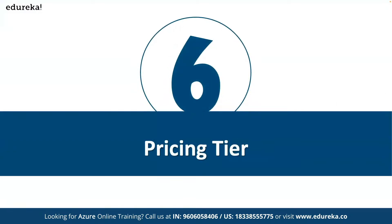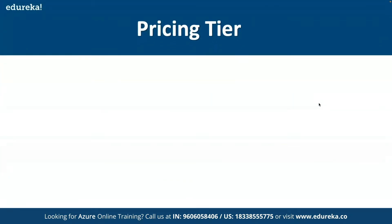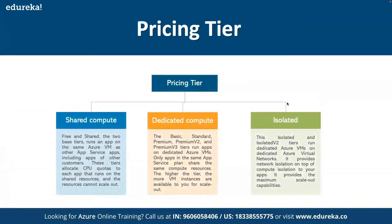Regarding the pricing tier, we have various options in Azure. We have shared compute, dedicated compute, and isolated. Shared compute comes under Free and Shared — the two basic tiers. It runs an application on the same Azure virtual machine as other app service applications, including apps of other customers. These tiers allocate CPU quotas to each app running on shared resources, and the resources cannot scale out. These tiers are intended only for development and testing.